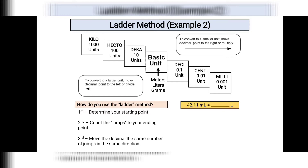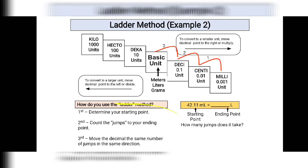Let's have our next example: convert 42.11 milliliters to liters. The starting point is milliliters and the ending point is liters. Let's count how many jumps to liters: one, two, three — so three jumps.